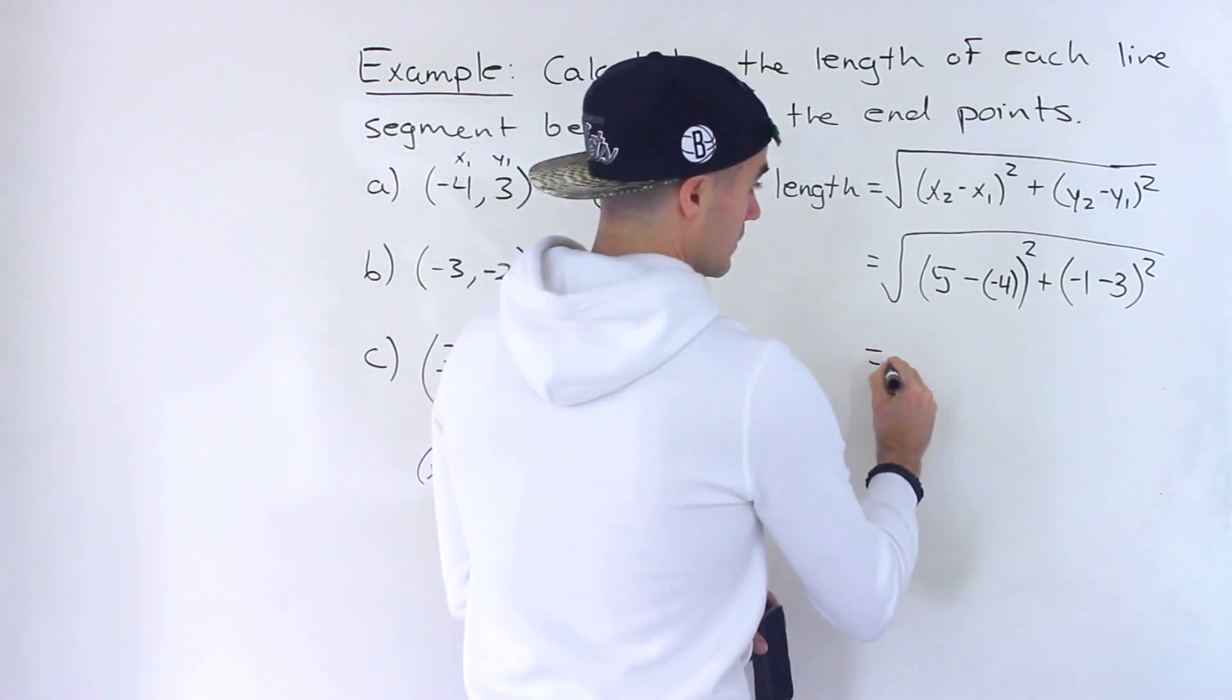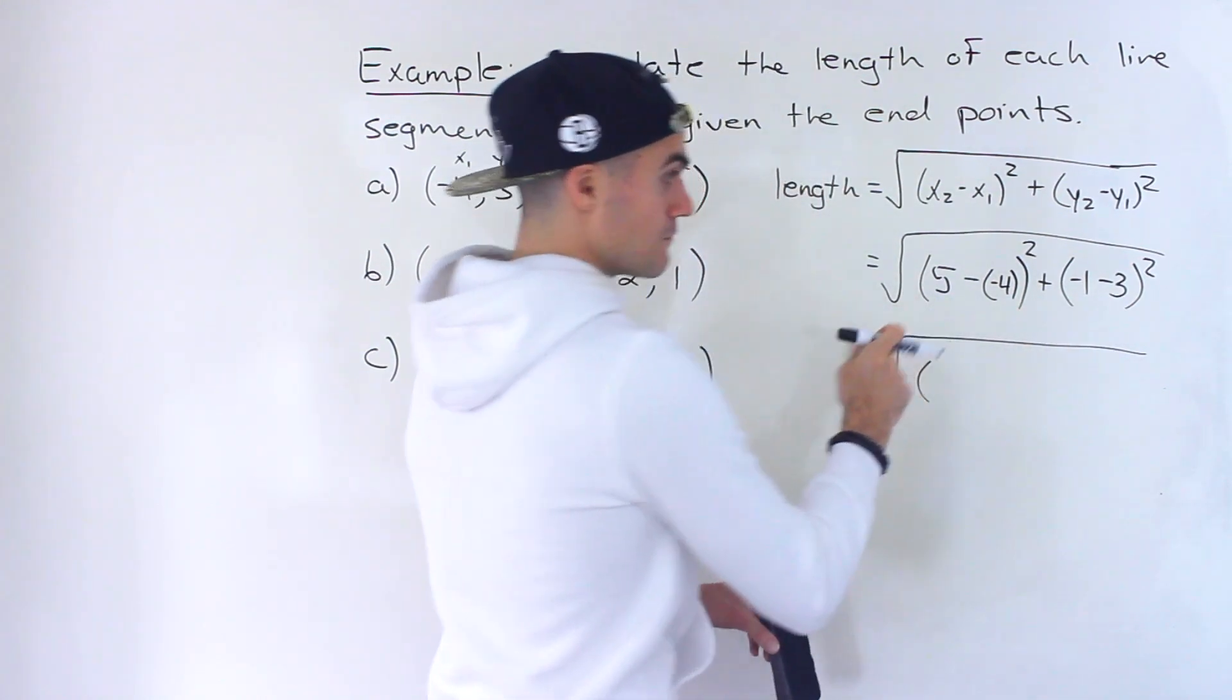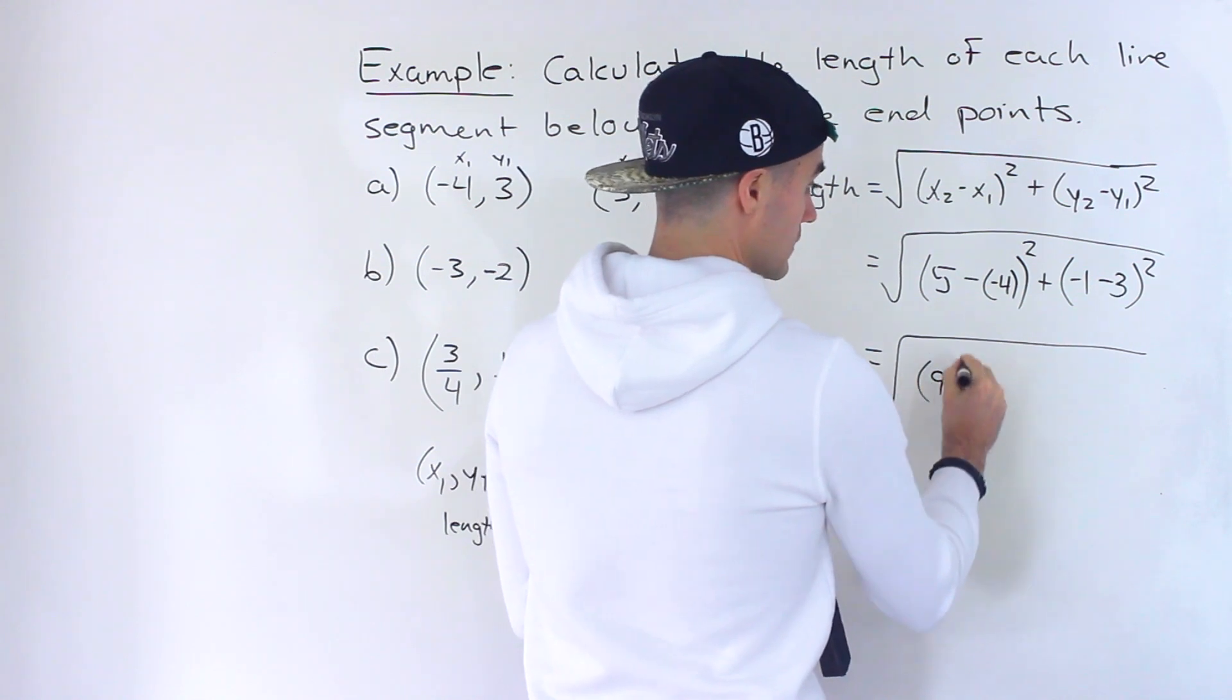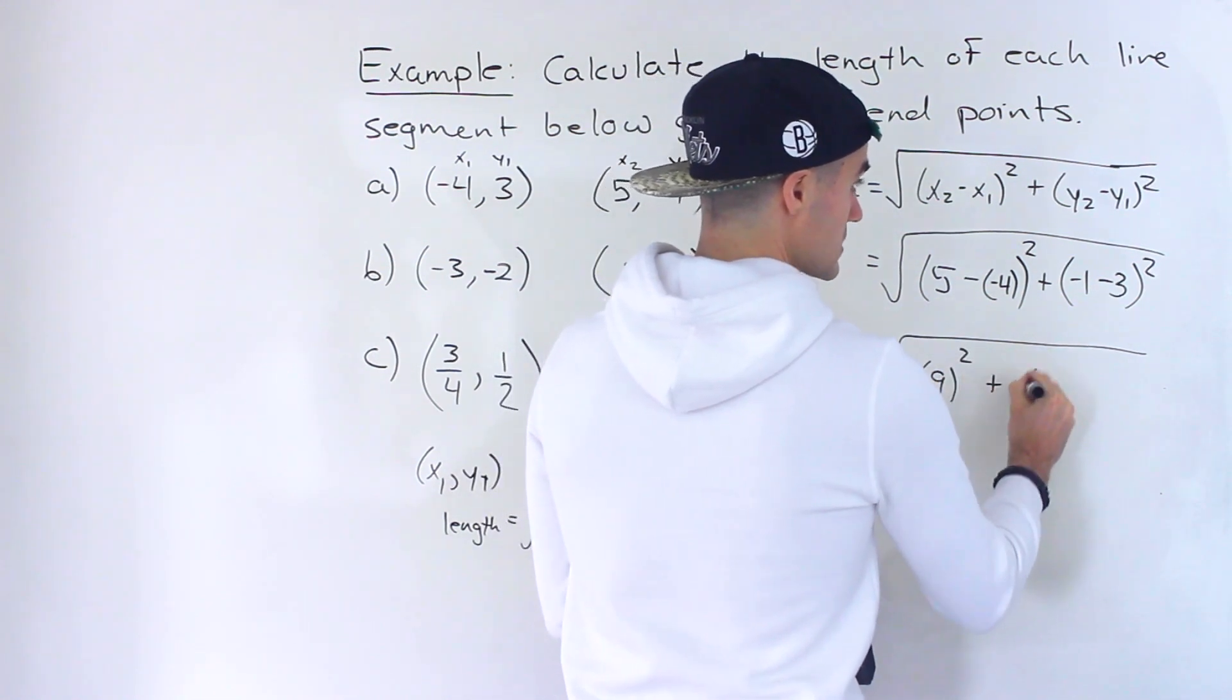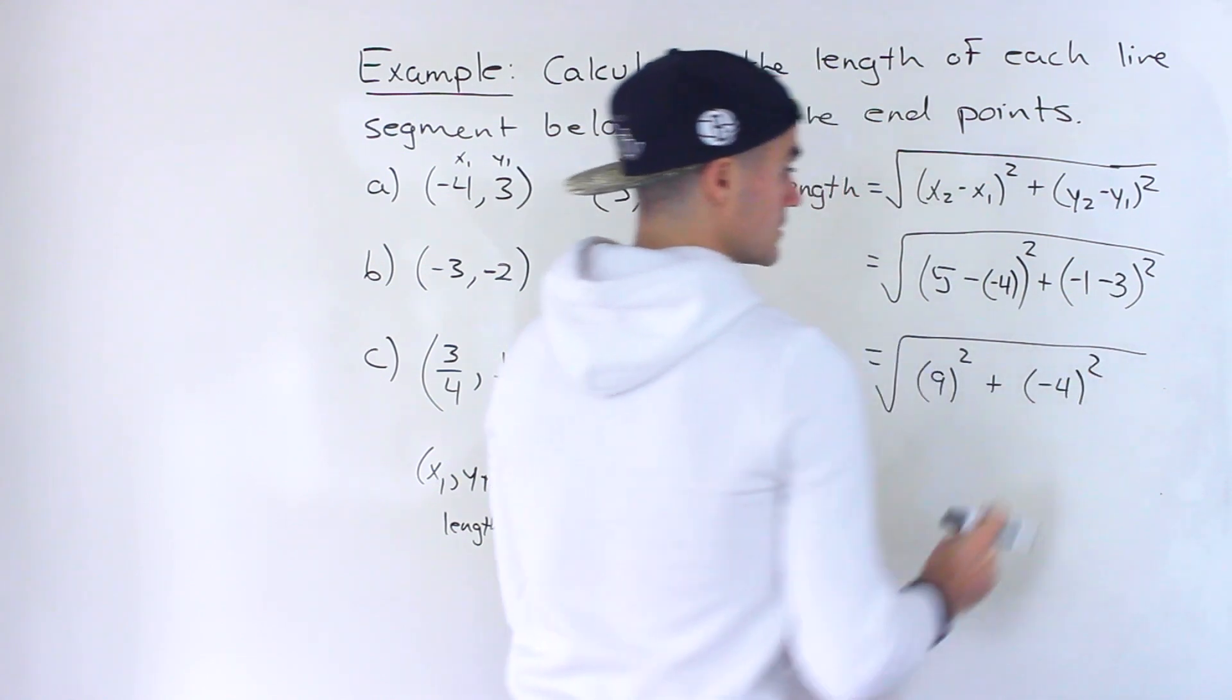So what happens here, we've got the square root. Work with the bracket first. 5 minus negative 4 is like 5 plus 4, which gives us 9. That's going to be squared plus negative 1 minus 3 gives us negative 4. And that's going to be squared.